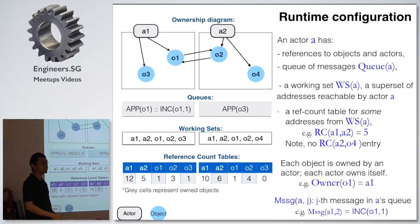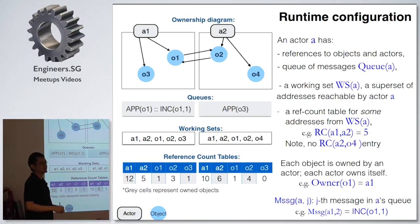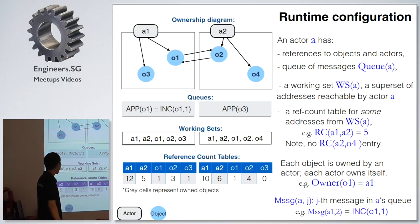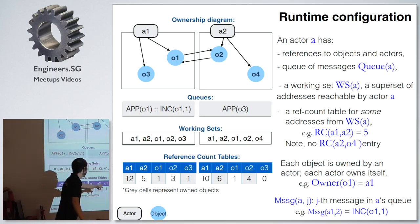Is the actor counting the total of objects it has? It's actually a weighted count — not really the number of references per se. Don't think of it as the number; think of it as a weighted number.